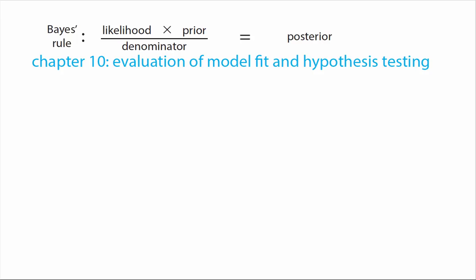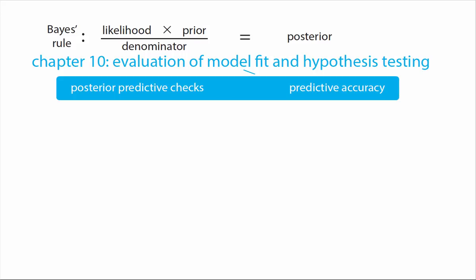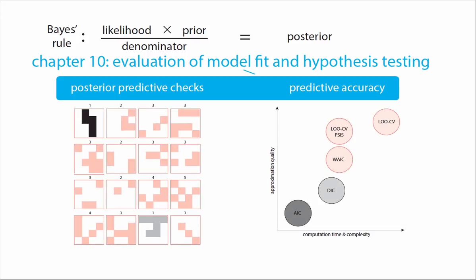In chapter 10 we take a step away from Bayes' rule for inference and instead look at how we can assess a given model's fit to the data and how we can compare between different models. These two subjects come under two subheadings: posterior predictive checks and various measures of predictive accuracy. I discuss both concepts in quite a lot of detail because they're invaluable tools in the Bayesian analyst's toolkit.